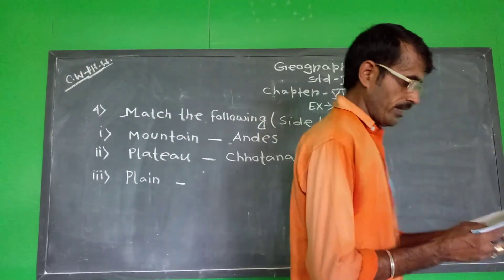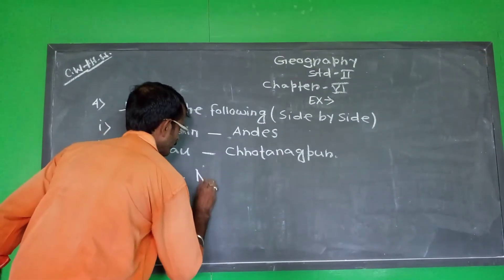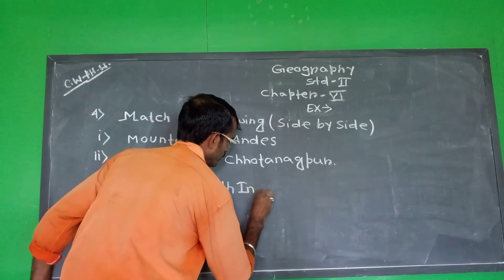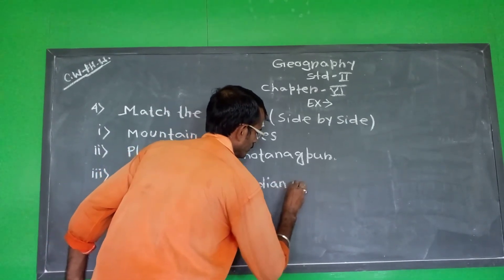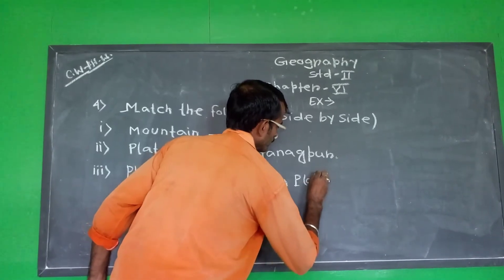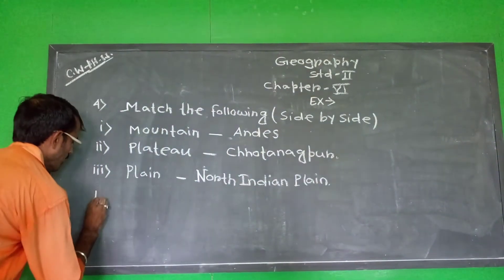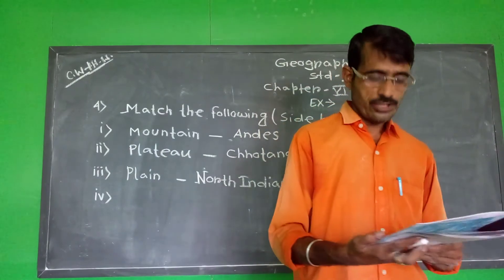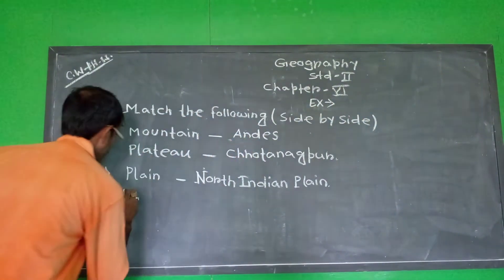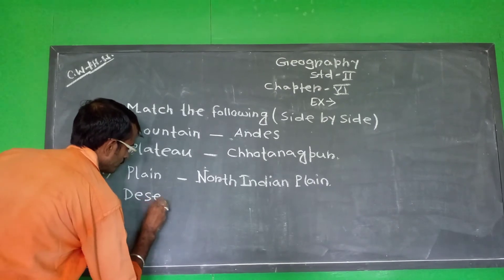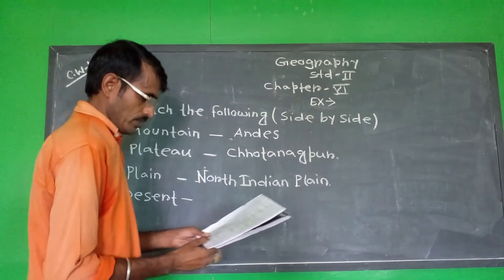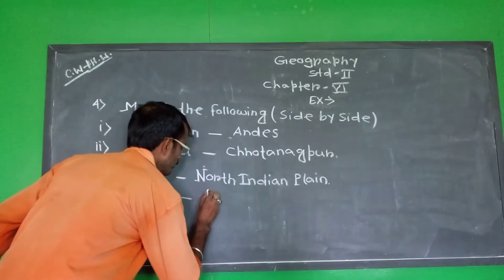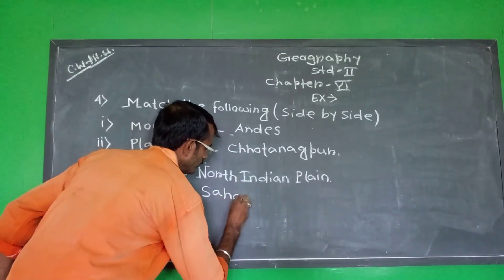Plain will be North Indian Plain. Okay. And number 4 — Desert. The other way, the other way — Desert.